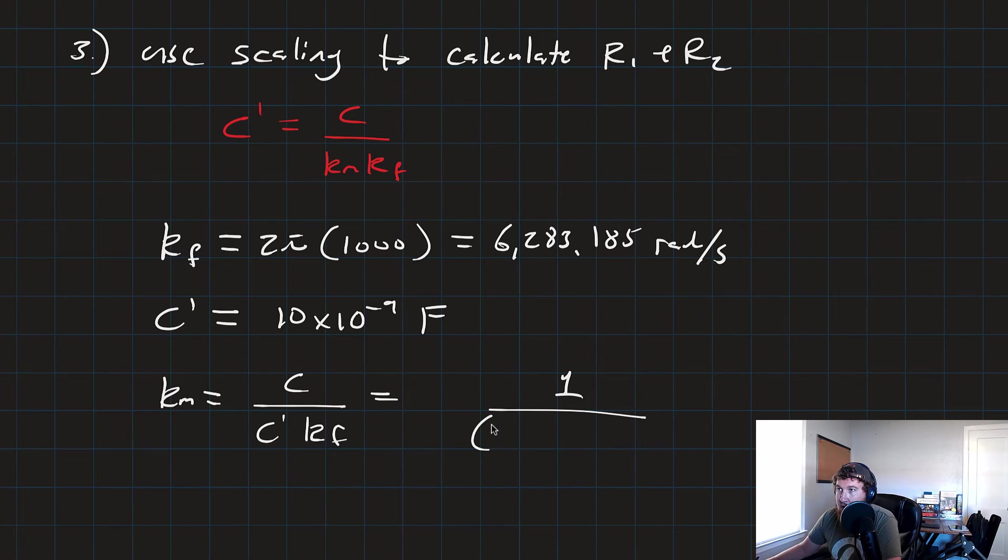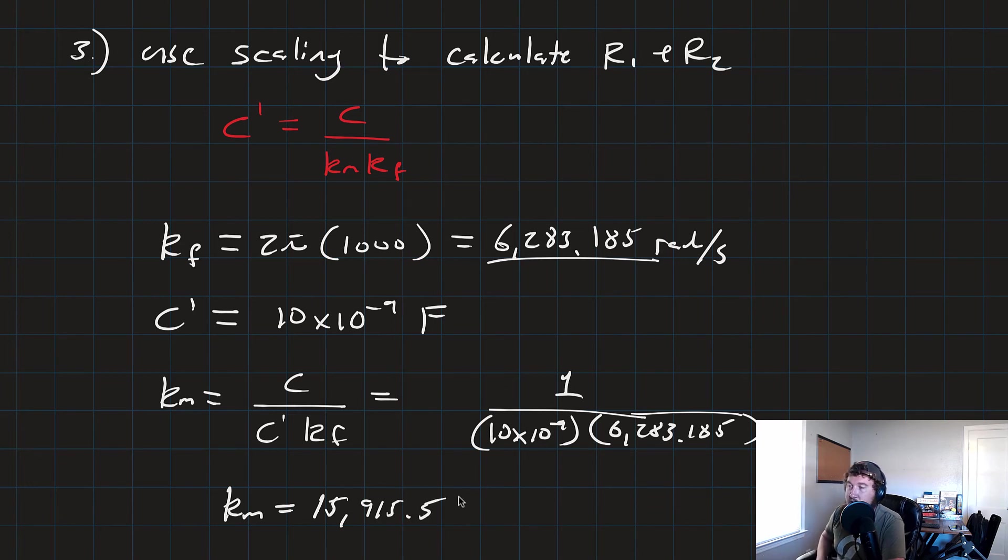Times our frequency scaling factor, 6,283.185. And that's going to get us a Km equal to 15,915.5.